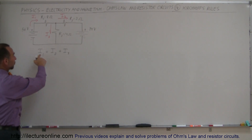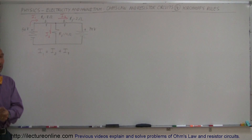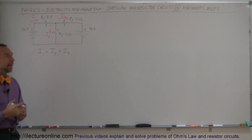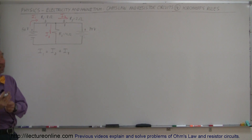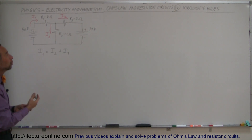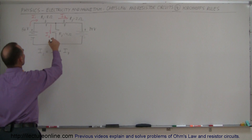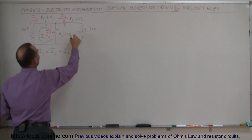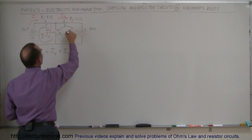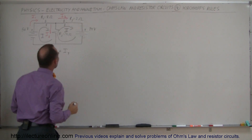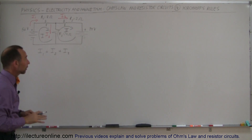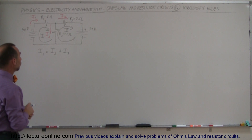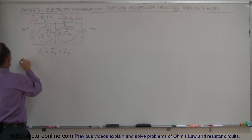We now have three unknowns, so we're going to need three equations. We need two additional equations, and we'll get those from Kirchhoff's second rule — that voltages around any loop add up to zero. We'll get one equation by going around loop number one and another by going around loop number two. It doesn't matter which direction you go around the loop — it makes no difference at all.